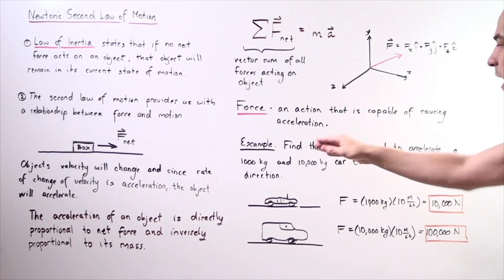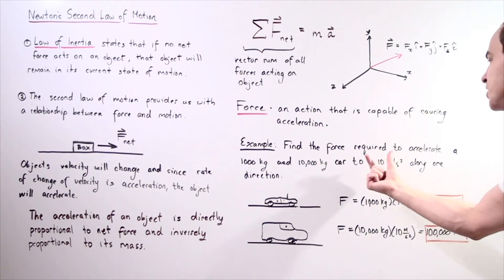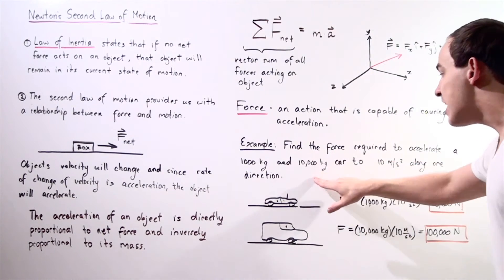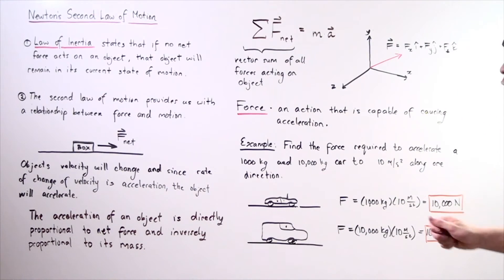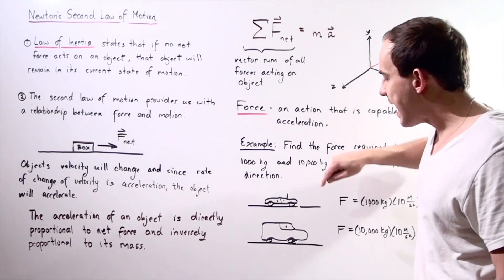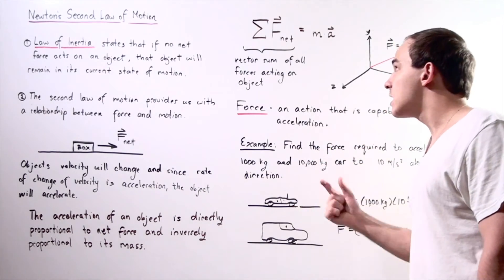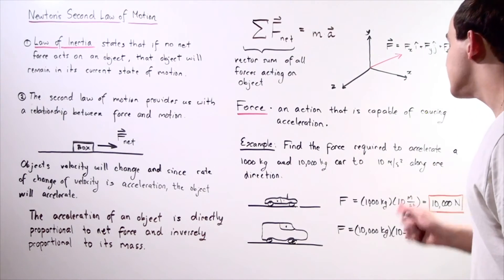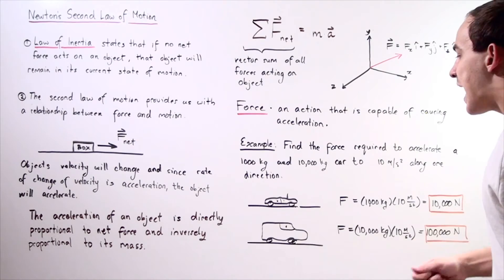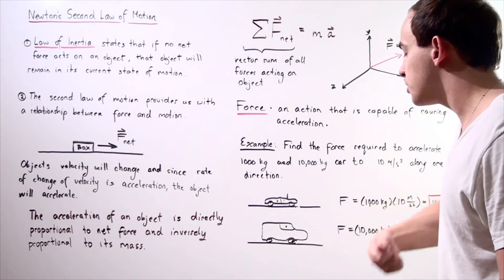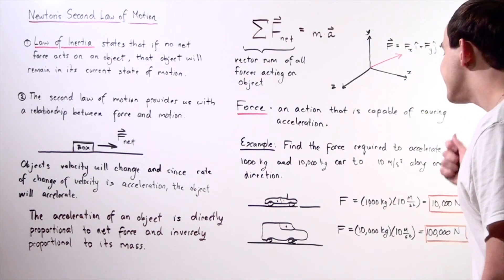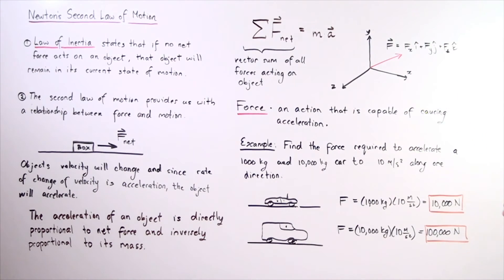Let's look at an example. Find the force required to accelerate a 1,000 kilogram car and a 10,000 kilogram car to 10 meters per second squared along one direction. We have one car that has a mass of 1,000 kilograms and another car that has a mass of 10,000 kilograms. We want to find how much more force we require to accelerate this more massive car to the same exact acceleration of 10 meters per second squared.